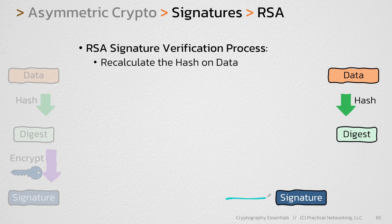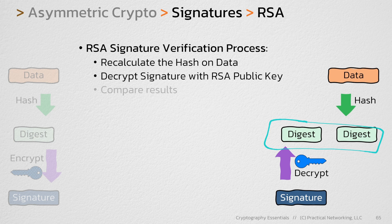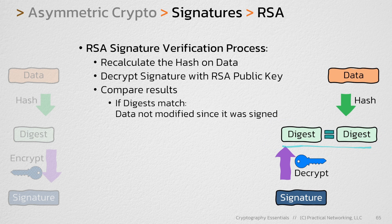Then you take the signature value and decrypt it using the RSA public key that matches the private key that did the encryption. And then you simply compare these two results. If these digests match, this tells you that this data has not changed since the signature was created and therefore the signature is verified.